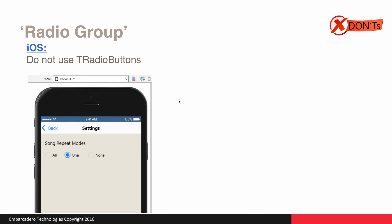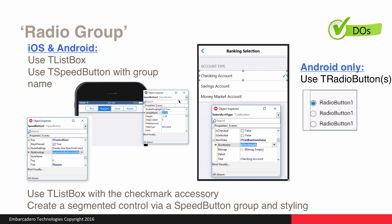There is no concept of a radio group on iOS, so you should not use radio buttons. For both iOS and Android, you should use either a T-ListBox — where you can leverage the accessory of a checkmark for selected items — or set up a T-SpeedButton with a group name to create a segmented control. On Android specifically, you could also use radio buttons, as they are common on Android but not on iOS.